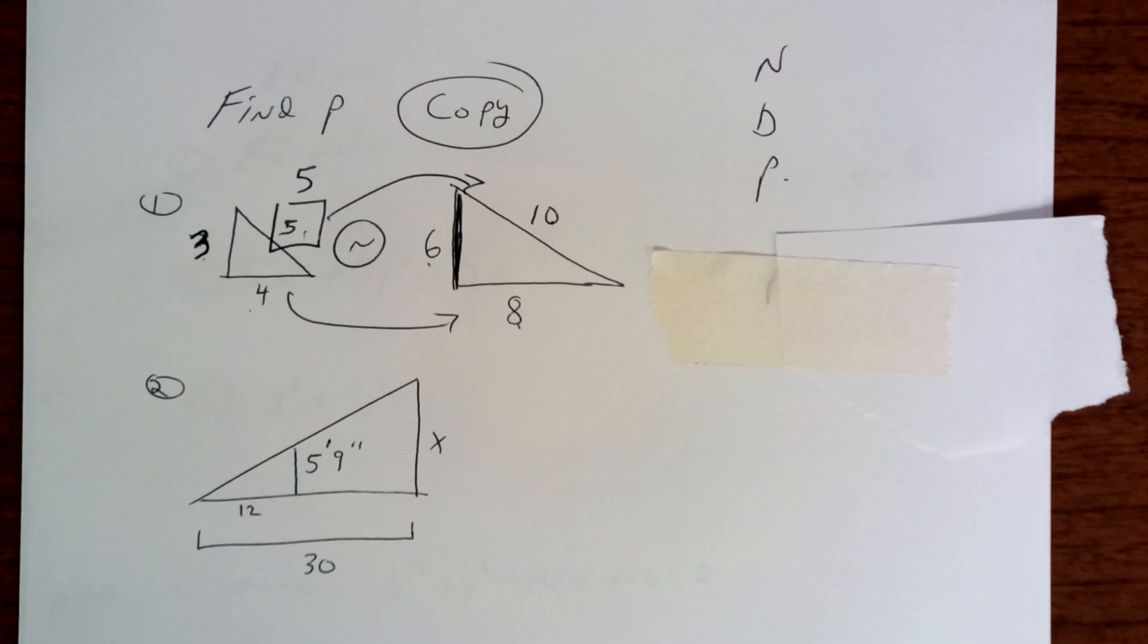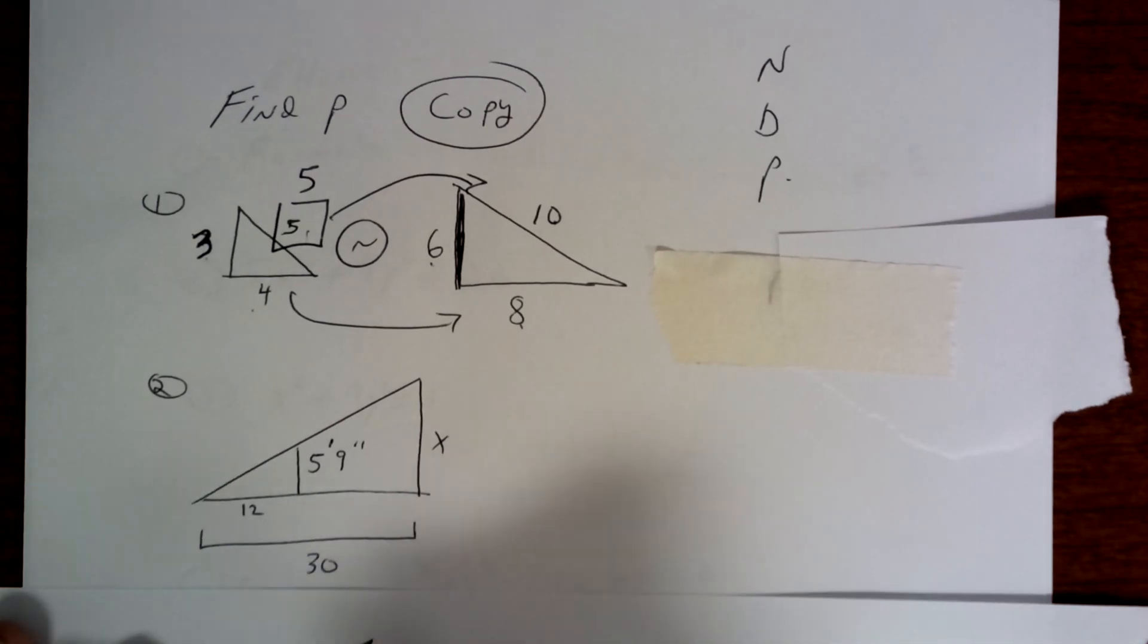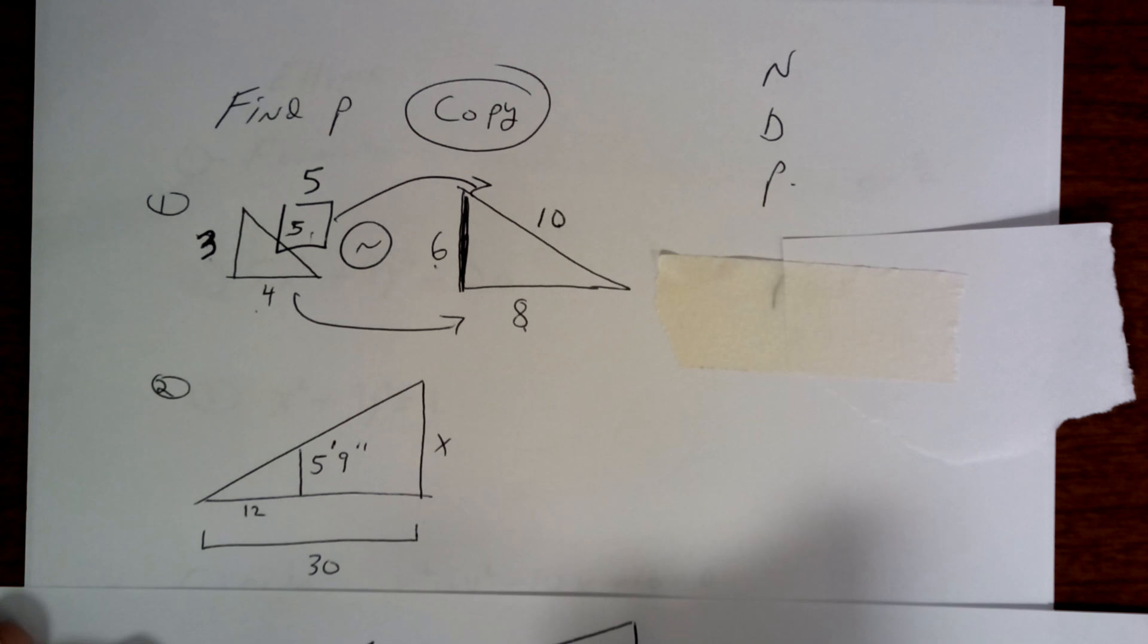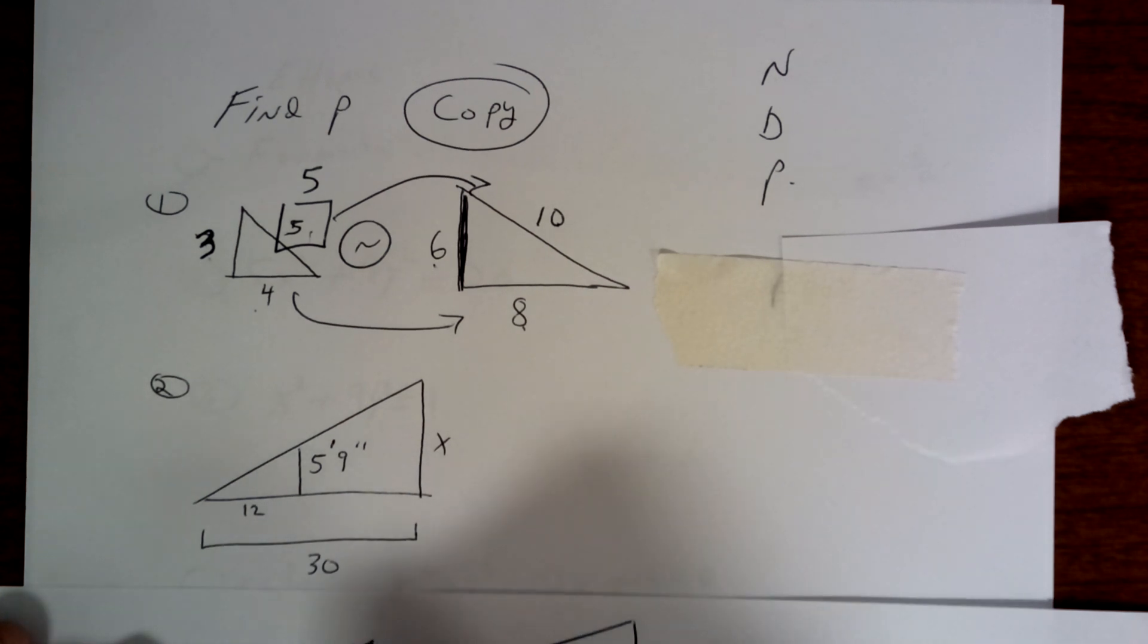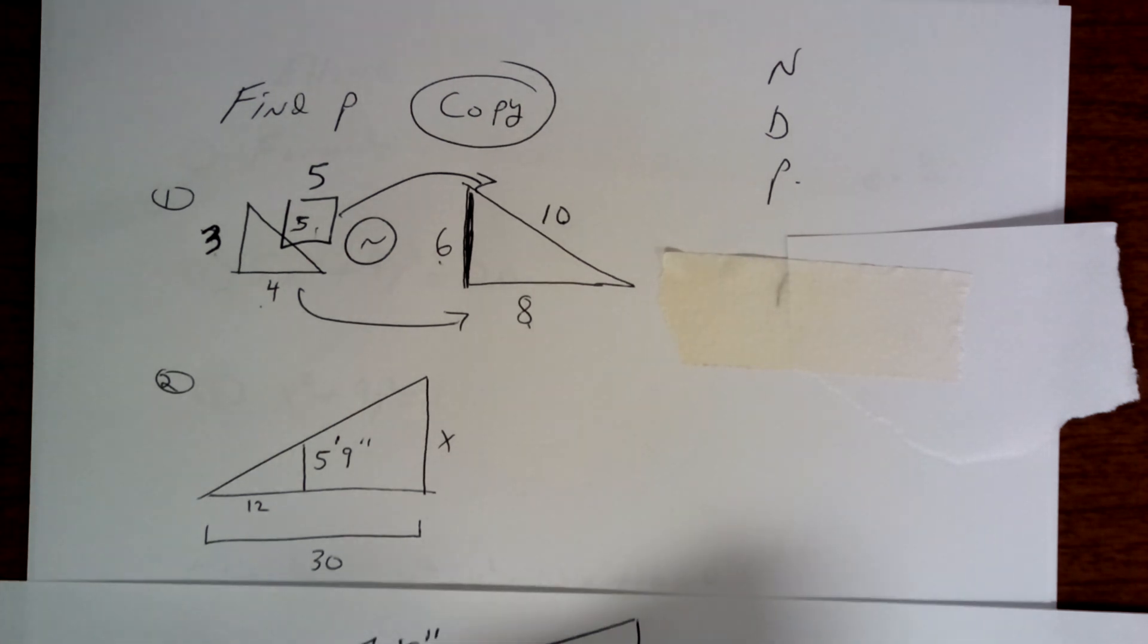Look at this one right here. You need to separate them. So you have a small triangle, and you have a great big triangle. This one is x. This one is 5.9 or 5.9. This one is 12. The whole thing was 30. So 30 minus 12 is how much? Is that 18? I think it's 18.